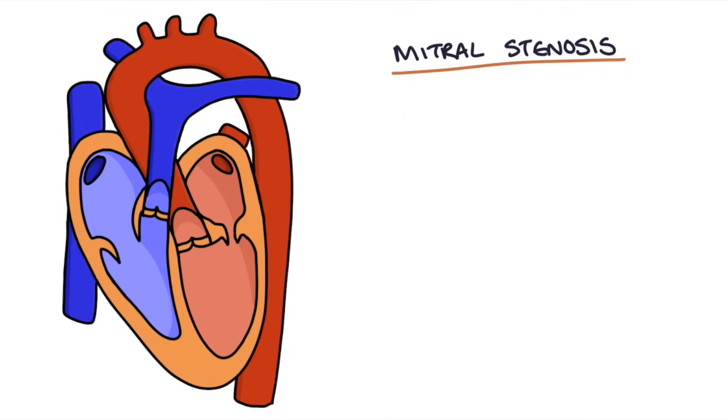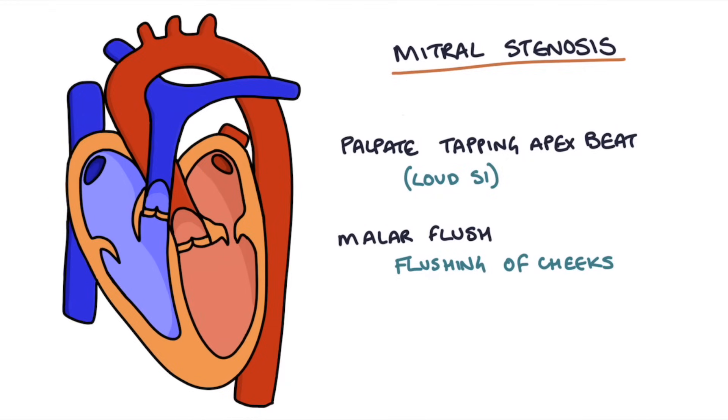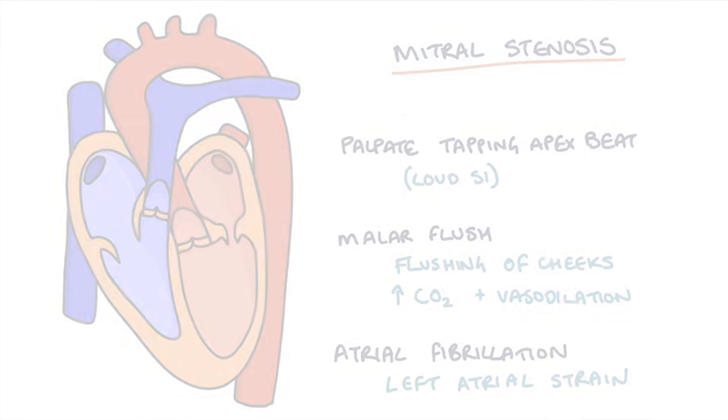A few other features of mitral stenosis is that you'll be able to palpate a tapping apex beat due to the loud S1 and it's also associated with a malar flush. This is a flushing of the patient's cheeks due to back pressure of blood into the pulmonary system, causing a rise in CO2 and vasodilation. It's also quite commonly associated with atrial fibrillation, and this is due to the left atrium struggling to push blood through a stenotic valve and causing disruption to the electrical signals and resulting fibrillation of the atria.